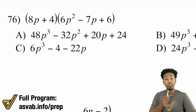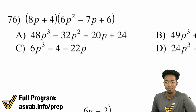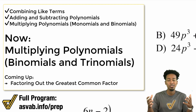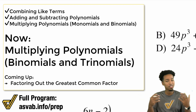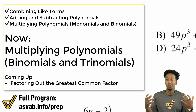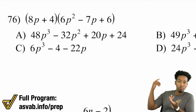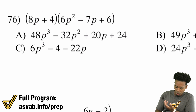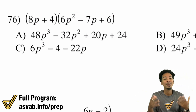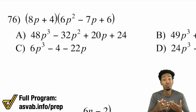Welcome back to your regularly scheduled math fun. In the previous video we went over multiplying polynomials — a binomial times a binomial. The question is: what if we have more complicated stuff? What if we have not just two terms times two terms, but two terms and three terms, or three by three, or four? What changes? The answer is absolutely nothing.